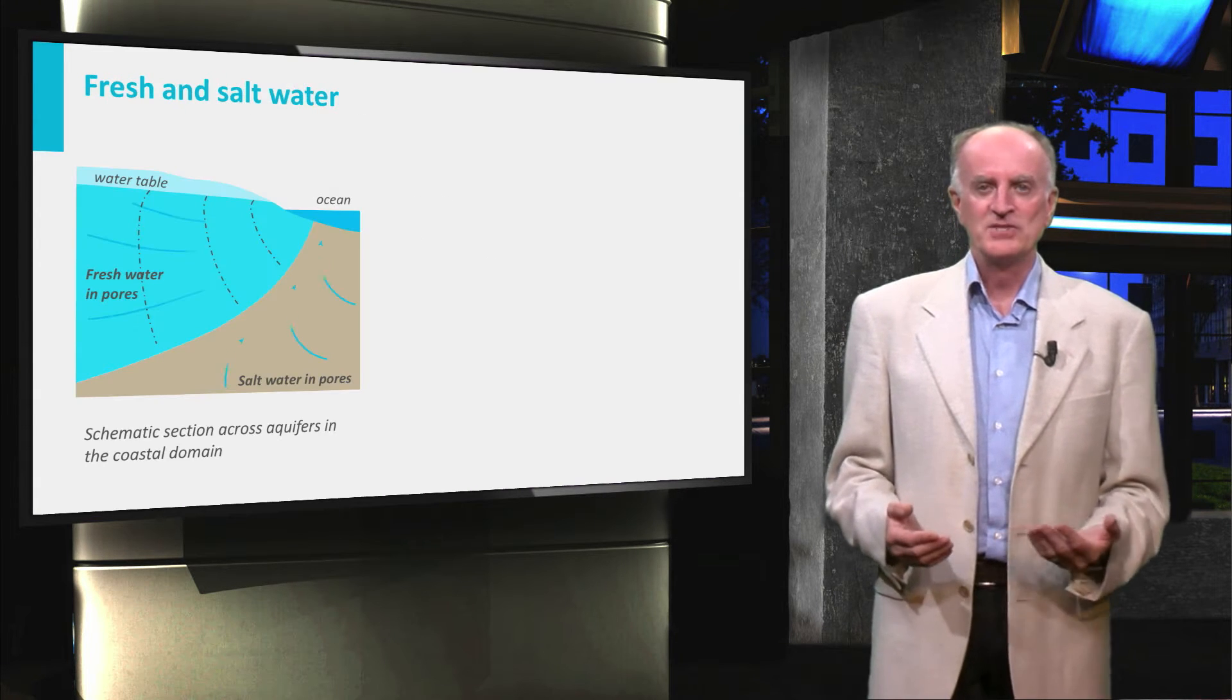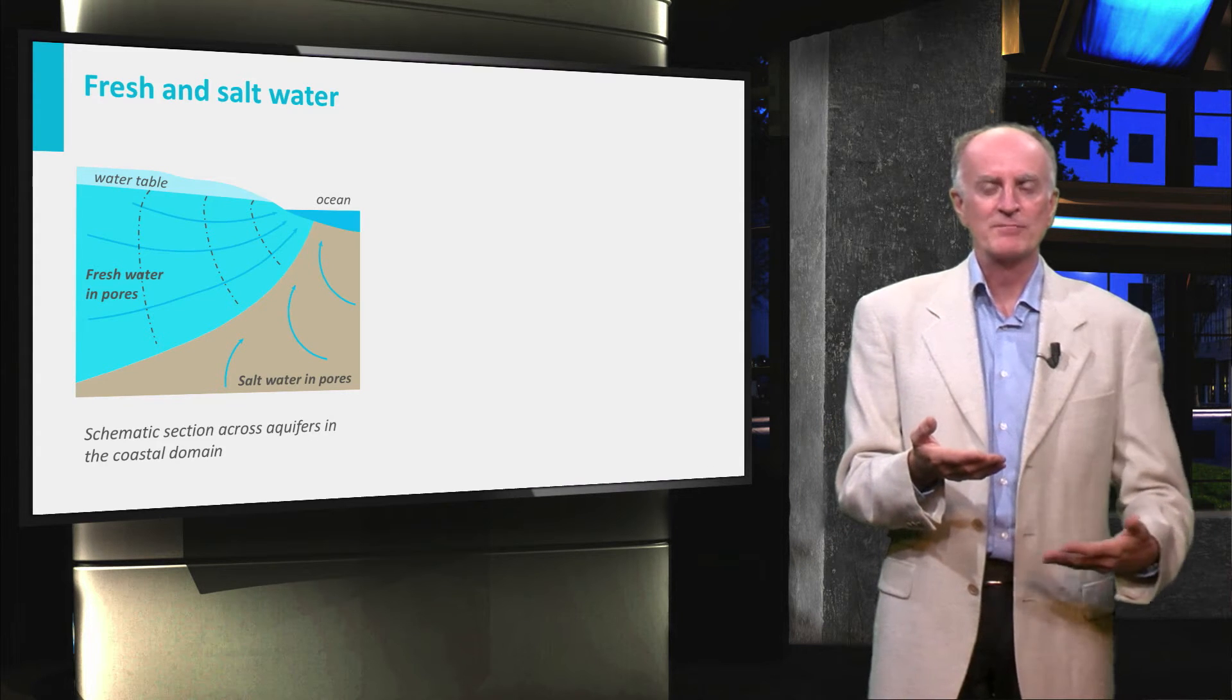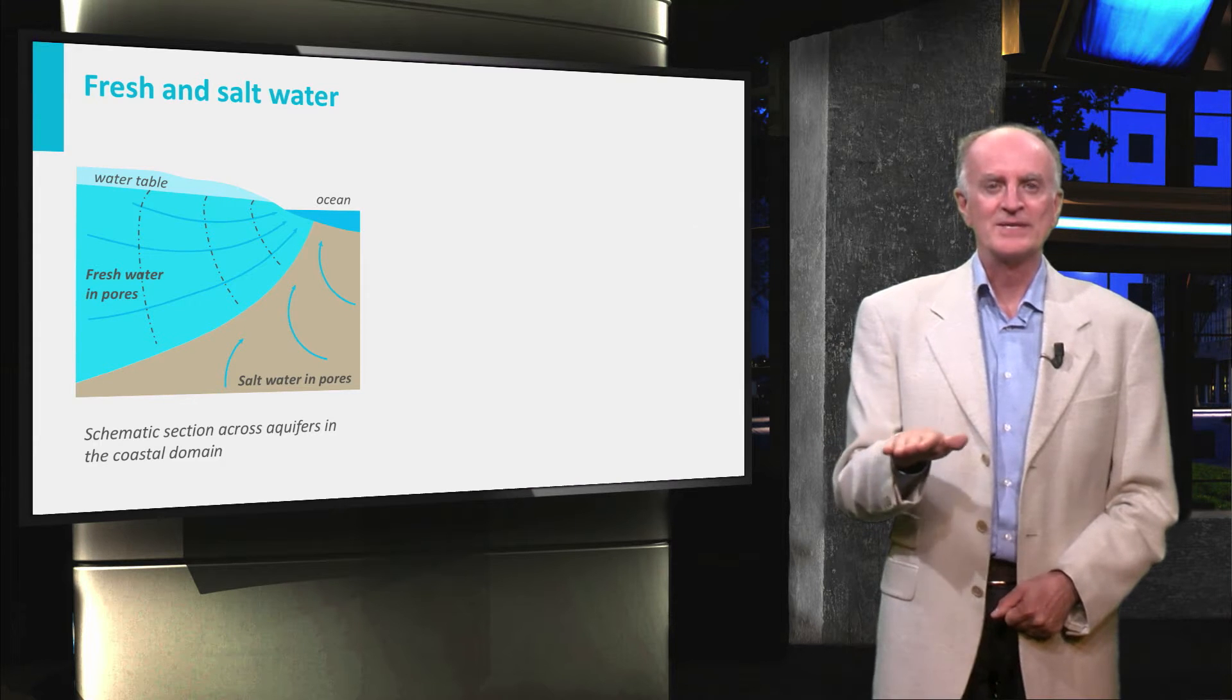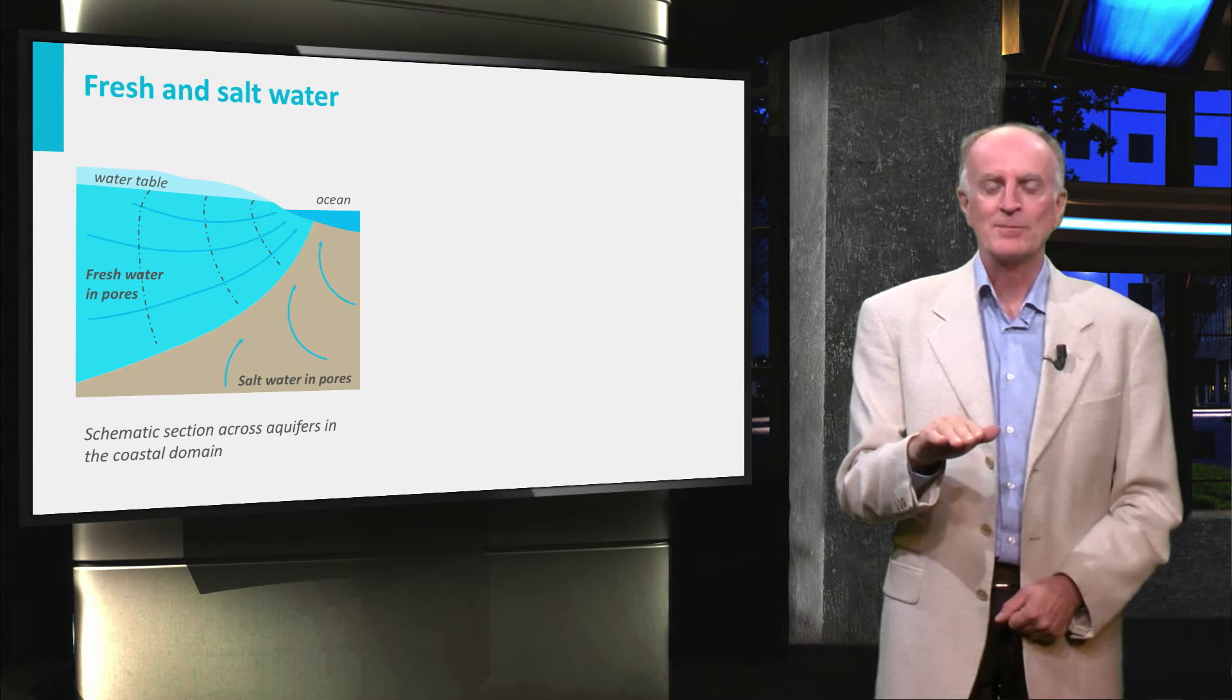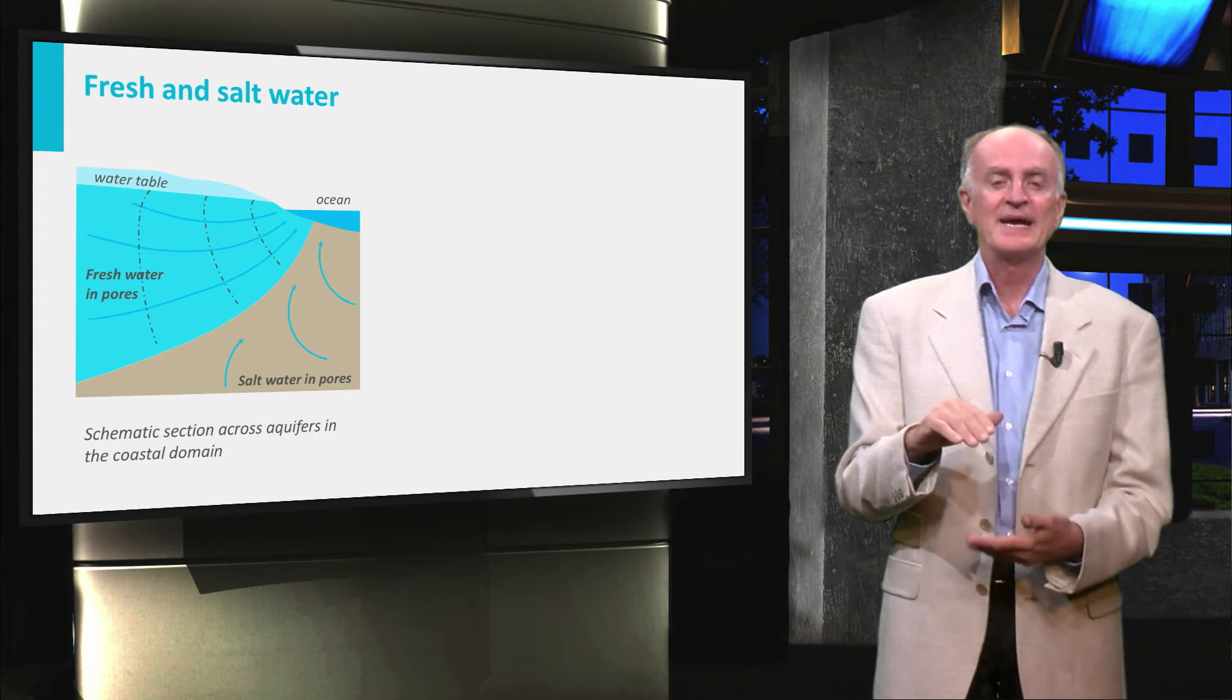The coastal domain is a region where fresh water, typically carried by rivers, comes in contact with marine waters. Because of its low density, fresh water will tend to remain close to the surface and will overlie the body of marine waters, which is characterized by higher density.